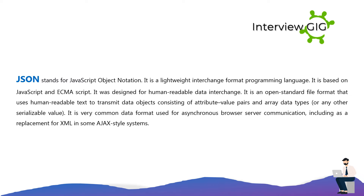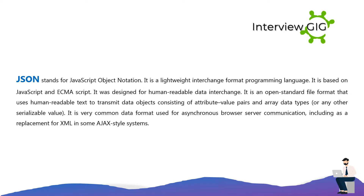JSON stands for JavaScript Object Notation. It is a lightweight interchange format. It is based on JavaScript and ECMAScript. It was designed for human-readable data interchange. It is an open standard file format that uses human-readable text to transmit data objects consisting of attribute-value pairs and array data types or any other serializable value.